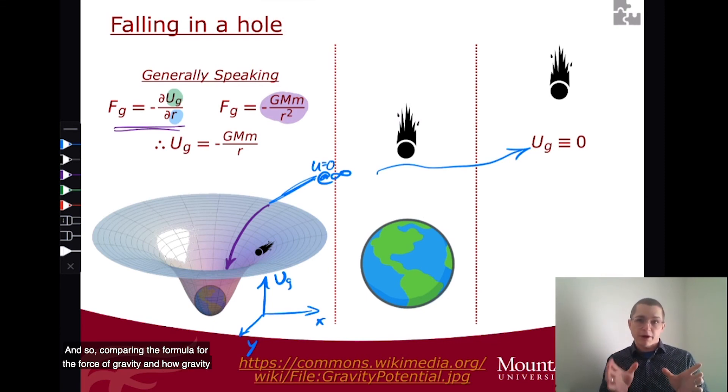And so comparing the formula for the force of gravity and how gravity is related to potential energy, we get a form where UG is minus GMM over R.